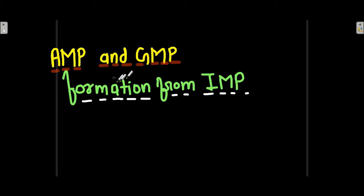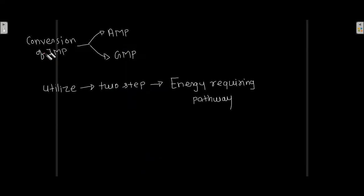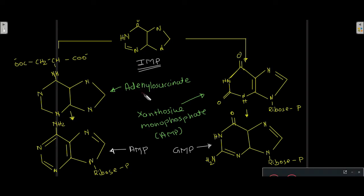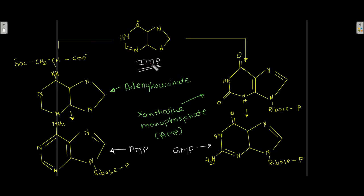AMP and GMP formation from IMP. The conversion of IMP to AMP and GMP utilizes a two-step energy-requiring pathway. IMP gets converted into adenylosuccinate, and then that adenylosuccinate gets converted into AMP.